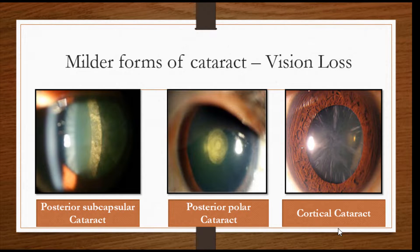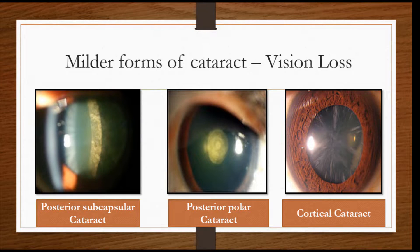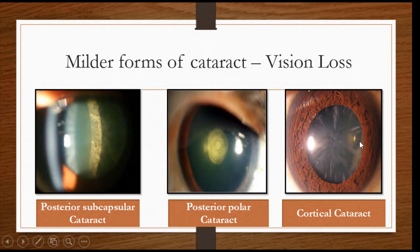There are also milder forms of cataract which cause vision loss. We have whitening of the posterior part of the lens which we call posterior subcapsular cataract, and here is a posterior polar cataract — the rest of the lens is clear, but the central posterior part has a white ring-like opacity which obstructs vision. This is a cortical cataract where the anterior cortical part becomes whitish and causes visual disturbance.